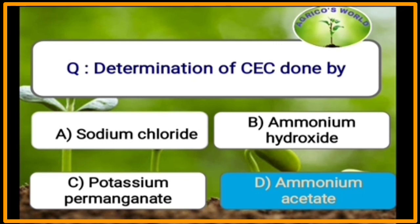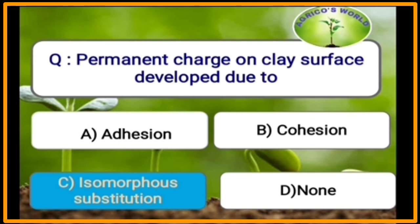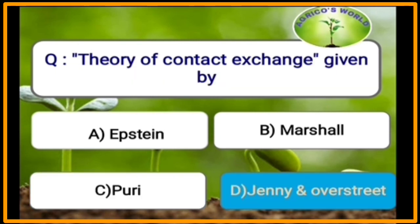Determination of cation exchange capacity is done using ammonium acetate. Permanent charge on clay surface is developed due to isomorphous substitution. The theory of contact exchange was given by Jenny and Overstreet.